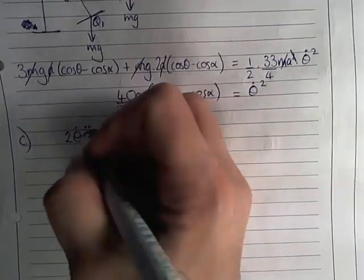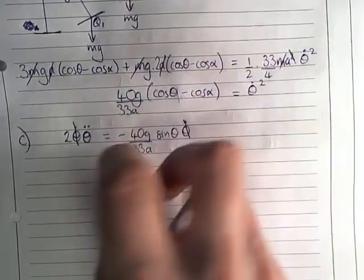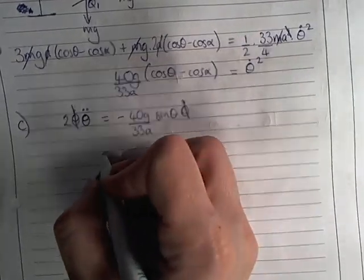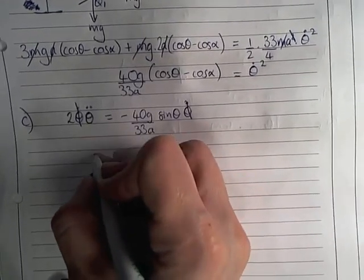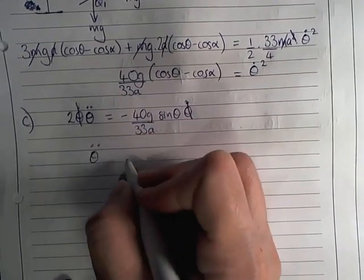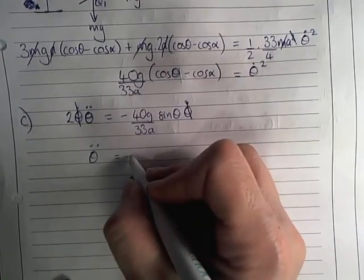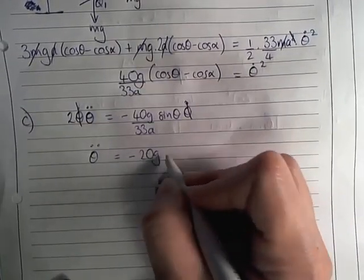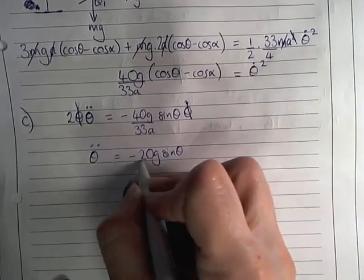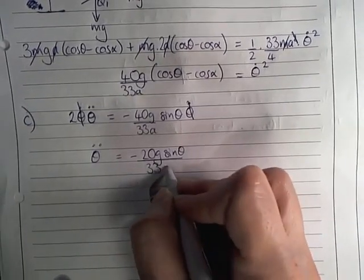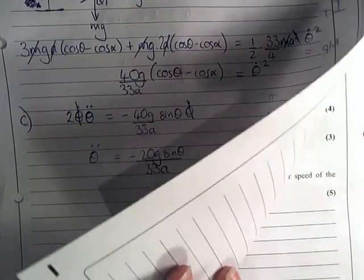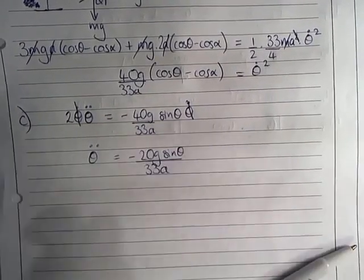Now you've got theta dot, theta dot, so we can get rid of this. And so we can end up with theta double dot straight away. We end up with theta double dot is negative 20g sine theta over 33a, and that part of the question is worth three marks.